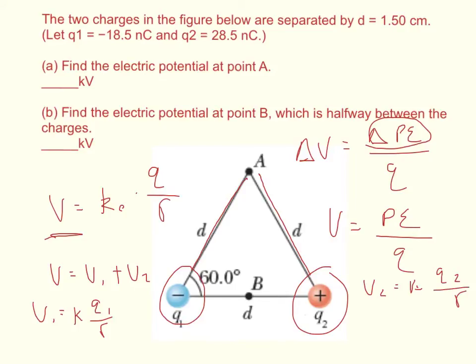And then when we just add the answers to those together, we get the electric potential. So K is 8.987 times 10 to the 9th, times Q1, which is negative 18.5 times 10 to the negative 9th in units of Coulombs. And Q2 is 28.5 times 10 to the negative 9th, and our radius is 1.5 times 10 to the negative 2, so that's the conversions of everything. So 8.99 times 10 to the 9th divided by 1.5 times 10 to the negative 2.